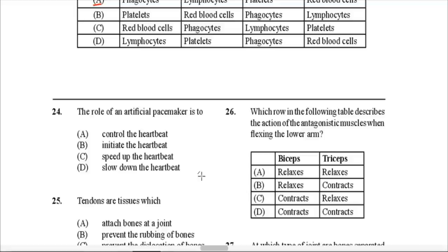Question 24: The role of an artificial pacemaker is to control the heartbeat. So the answer is A.